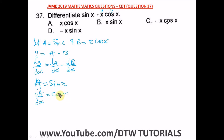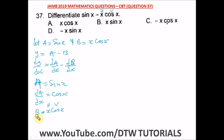Then we have b is equal to x cos x. In differentiating this, remember the product rule. This is u and this is v. So db/dx would be equal to u dv/dx plus v du/dx.